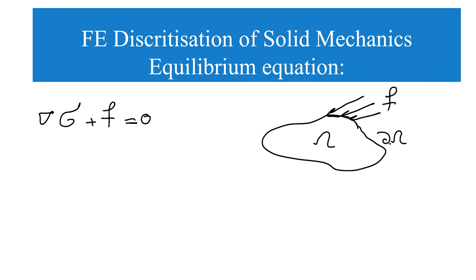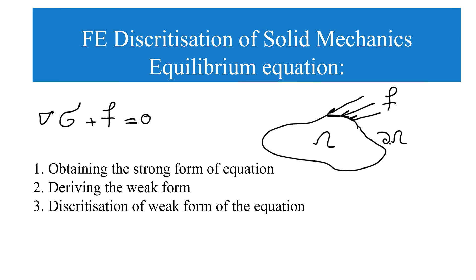The equilibrium equation in solid state can be described as a gradient of stress sigma in the domain omega, plus a force applied on the boundary or by unit lengths, or on the domain as a volumetric force. The steps to solve this equation are: first, obtain the strong form using the constitutive law, and then derive the weak form and discretize using finite element.